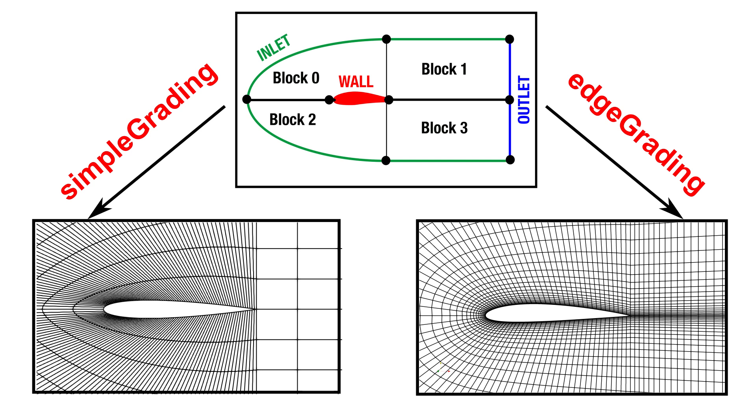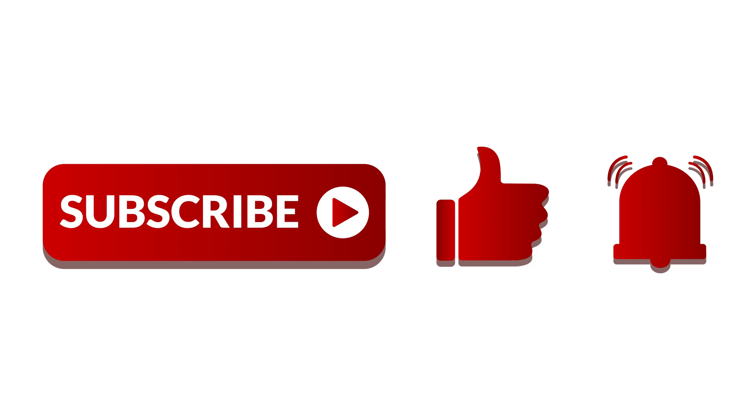In the previous part, we generated the mesh using a multi-block approach with the BlockMesh utility in OpenFOAM, applying a simple grading strategy to distribute the cells. In this part, we will move to edge grading, which provides more precise control over mesh density, especially near the airfoil region, where refinement is essential for accurate flow prediction. If you find this topic interesting, don't forget to like the video and subscribe to the channel for more CFD tutorials and engineering content, and make sure to share it with your colleagues who share the same passion for simulation and open source tools.